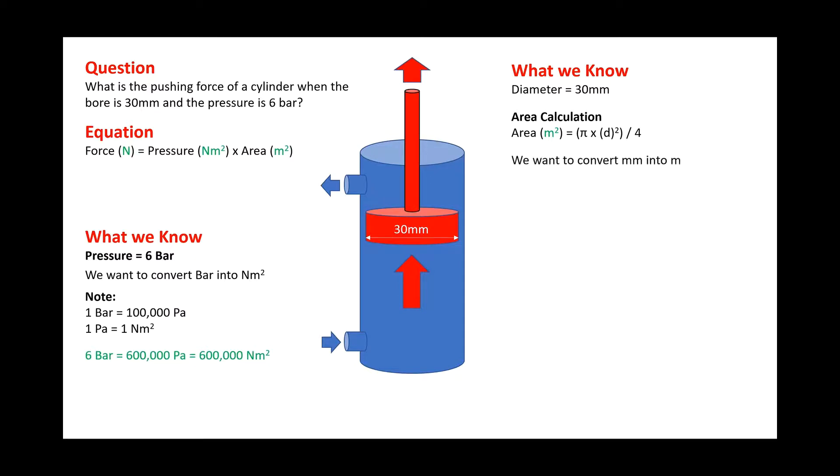We've got our diameter in millimeters and this needs to be converted to meters, so 1 millimeter equals 0.001 meters, so 30 millimeters equals 0.030 meters.